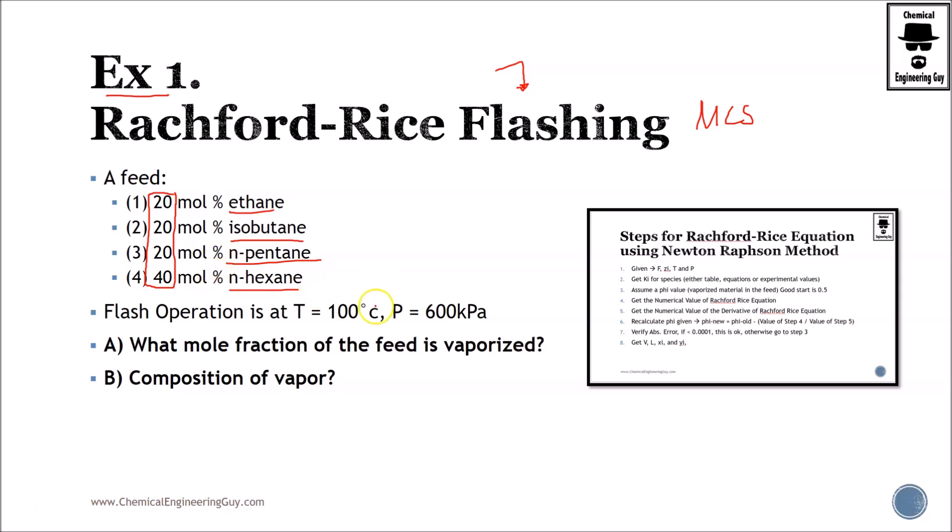Great. Flashing operations at 100 Celsius, this is isothermal, and we have a high pressure. What mole fraction of the feed is vaporized? So, technically speaking, phi, because we want to know how much vapor is present, and what is the composition of the vapor? That will be Y.